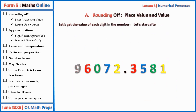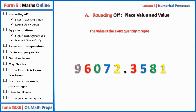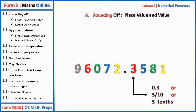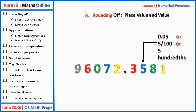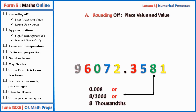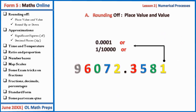Now let's get the value of each digit in this number. The value is the exact quantity it represents — place value is about position, value is the exact quantity. So three represents 0.3, or three over ten, or three tenths. Five has a value of 0.05, or five over one hundred, or five hundredths. Eight is 0.0008, or eight over one thousand. One is 0.0001, or one over ten thousand.